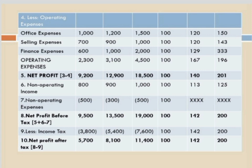Non-operating expenses: Year 1 = 500, Year 2 = 300, Year 3 = 500. Note: there appears to be a typing error in the question data, so please check and calculate accordingly. Net profit before tax is Point 5 plus Point 6 minus Point 7: Year 1 = 9,200 plus 800 minus 500 = 9,500. Year 2 = 12,900 plus 900 minus 300 = 13,500. Year 3 = 18,500 plus 1,000 minus 500 = 19,000. Percentages: Year 2 — 13,500 divided by 9,500 into 100 = 142. Year 3 — 19,000 divided by 9,500 into 100 = 200.